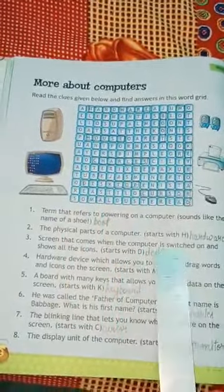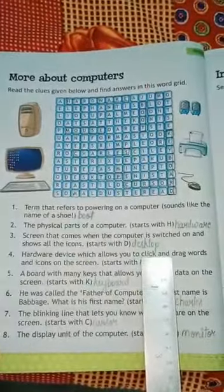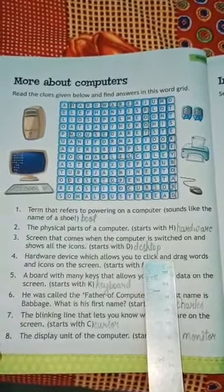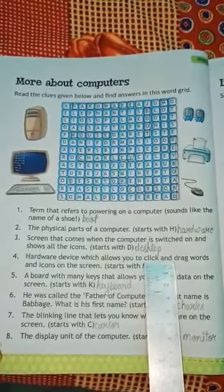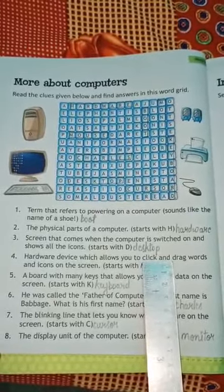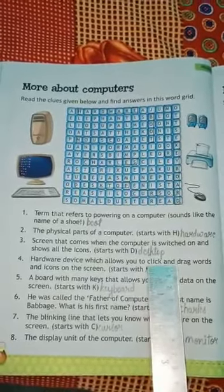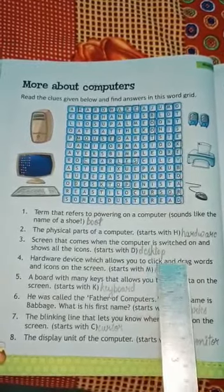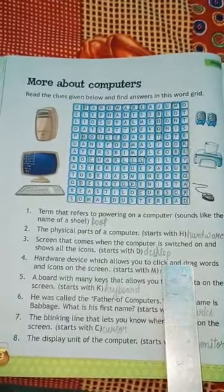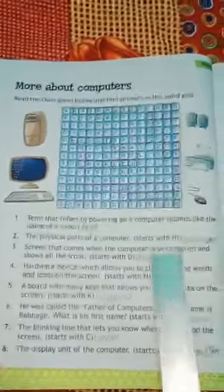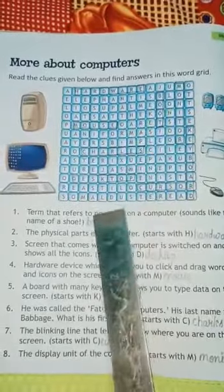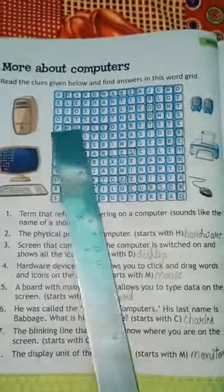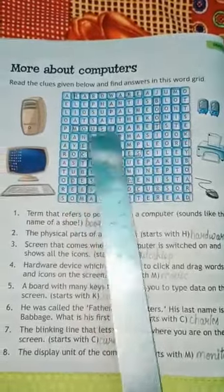Next one is hardware device which allows you to click and drag words and icons on the screen. Woh hardware device jo apko click karne ke liye and words drag karne ke liye icons ke liye screen per allow kerti hai. Start with M. M se start hoti. What is this? Yes. Mouse. Where is mouse? Yes. M-O-U-S-E. Mouse.